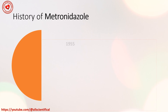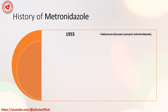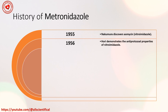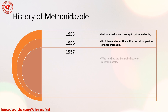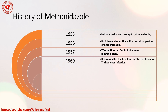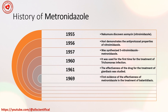History of metronidazole: In 1955, Nakamura discovered 2-amino-5-nitroimidazole. In 1956, Hori demonstrated the anti-protozoal properties of nitroimidazole. In 1957, metronidazole was synthesized. In 1960, it was used for the first time for treatment of trichomonas infection. In 1961, its effectiveness for treatment of giardiasis was studied. In 1969, the first evidence of its effect in treating balantidiasis appeared.